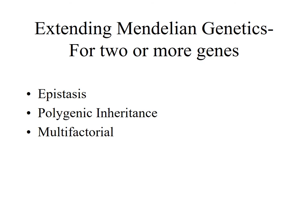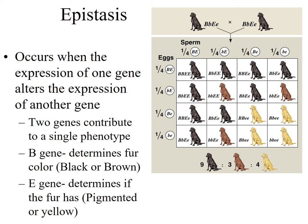We've been looking at the interaction at a heterozygote level for complete dominance, incomplete dominance, and codominance — where the phenotype of the heterozygote determines that relationship — and then we talked about pleiotropy. But what if we're talking about interactions between two separate genes? I want to briefly introduce the concept of epistasis, polygenic inheritance, and multifactorial inheritance. Epistasis occurs when the expression of one gene alters the expression of another gene, so two genes contribute to a single phenotype.